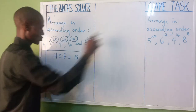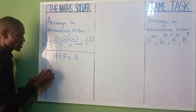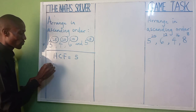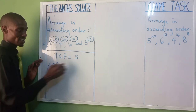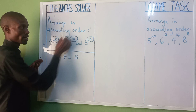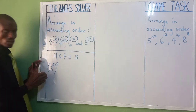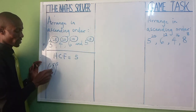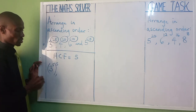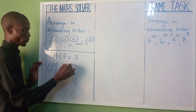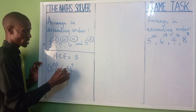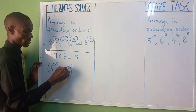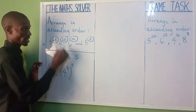We are now going to factor out 5 from each exponent. So three raised to the power of 25 becomes three raised to the power of five times five. For the next one, four raised to the power of 20: put your 5 outside, and write 4 inside the bracket, because four times five is 20.